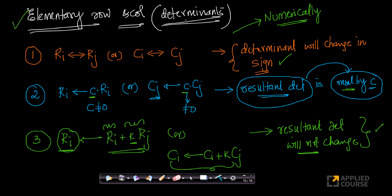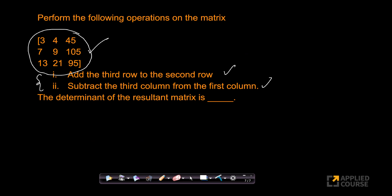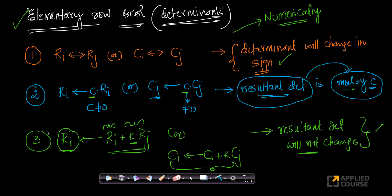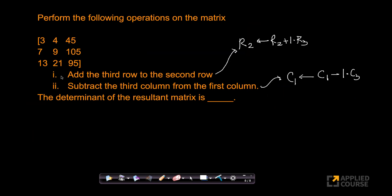These elementary operations help you solve these types of problems very easily. The first operation says add the third row to the second row, so: row 2 equals row 2 plus 1 times row 3. The second operation says subtract the third column from the first column, so: column 1 equals column 1 minus 1 times column 3. Both of these operations belong to the third category — adding a multiple of one row or column to another.